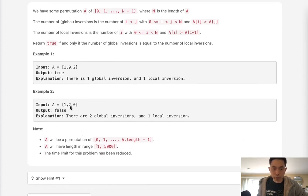Here we can see there's going to be two global inversions. One is greater than zero and two is greater than zero but the only local inversion here is two is greater than zero but one is not greater than two.